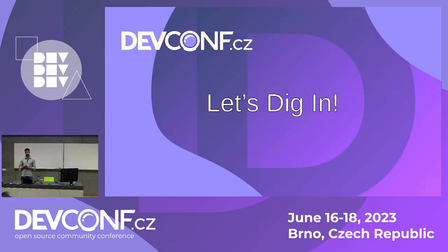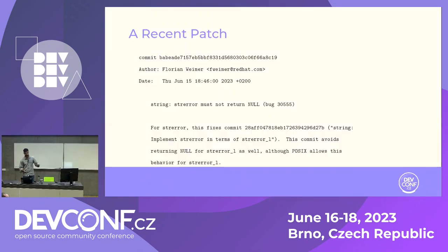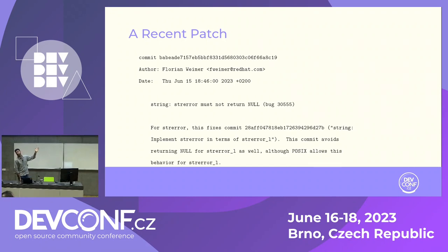Now I'll go into the anatomy of a relatively simple patch — something halfway between fixing a typo in a comment and adding an entirely new feature that changes dozens of files. It's a fairly simple fix that went into glibc recently. My colleague Florian submitted it a couple of days ago and I reviewed it. It's basically a fix to a function called strerror — apparently this function must not return null, but for some reason it was returning null in some cases.